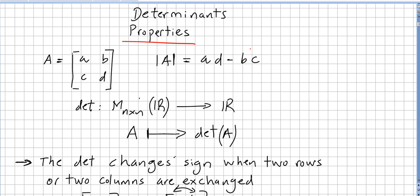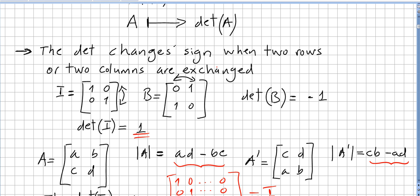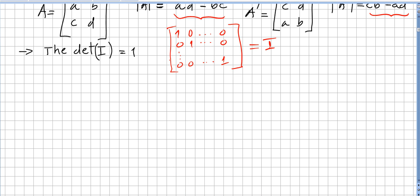This video is in the chapter of determinants. We have been seeing some properties. In the previous video we saw that the determinant changed sign when two rows or two columns are exchanged, and we also saw that determinant of the identity for any n dimension will be 1.